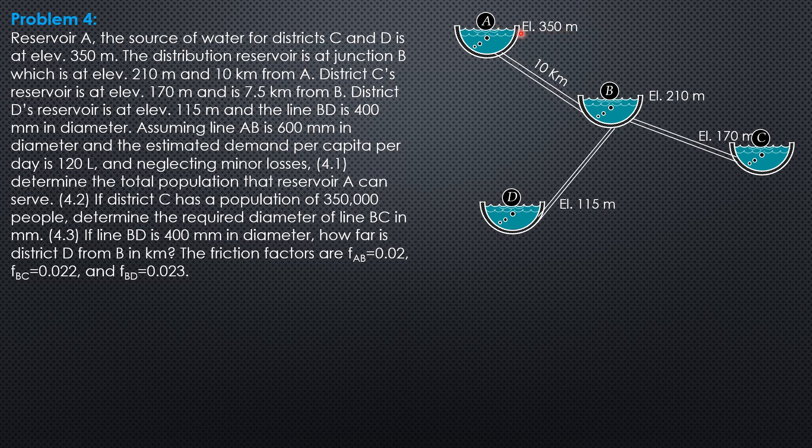Therefore, the head loss in pipe AB is 350 minus 210, and that is equal to 140 meters. The head loss in pipe BC is 210 minus 170, and that is 40 meters. And the head loss in pipe BD is elevation 210 minus 115, and that is 95 meters.